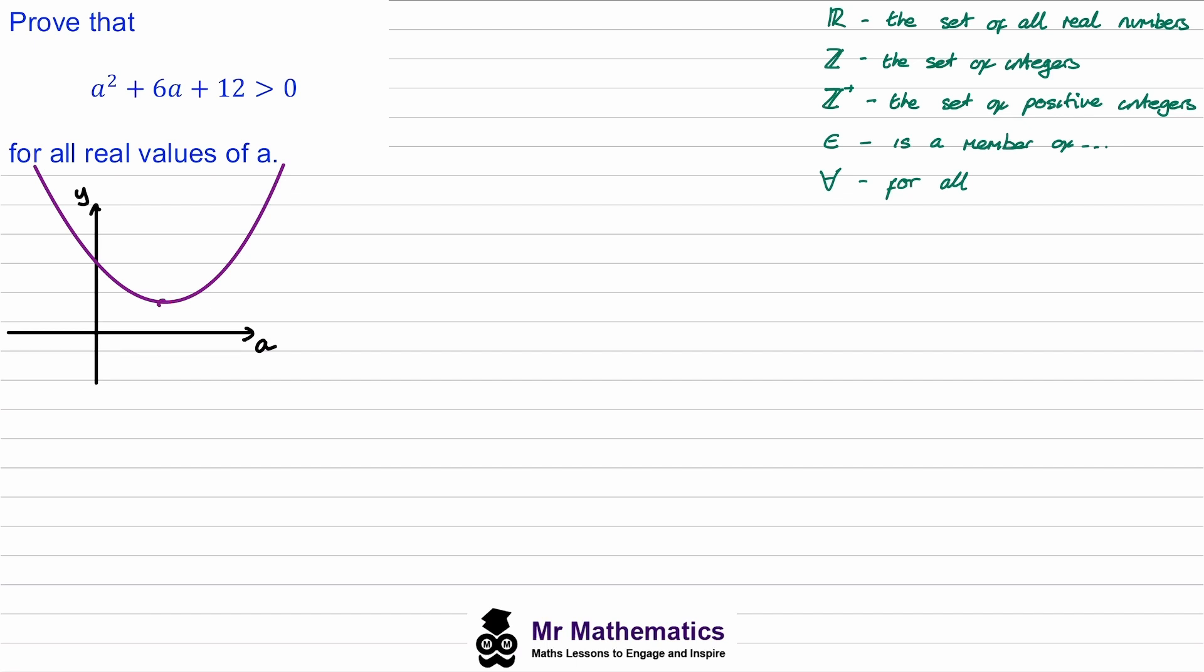We need to prove that this point cannot be on or below this axis. When we're looking at the minimum point, it's always a good idea to use the method of completing the square.